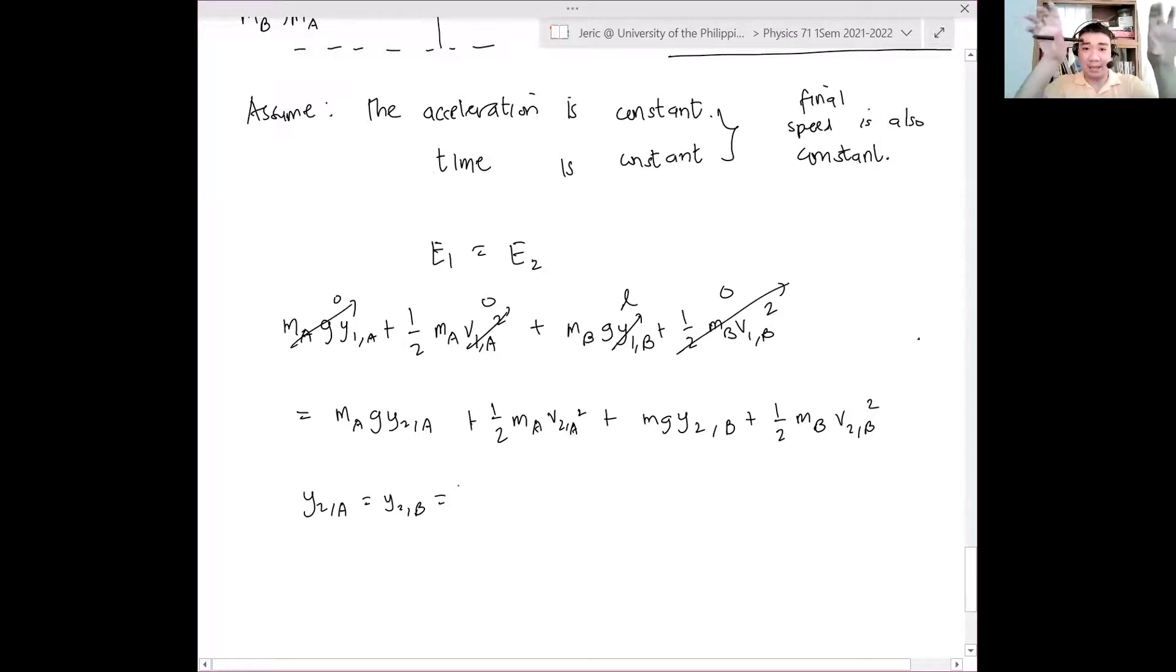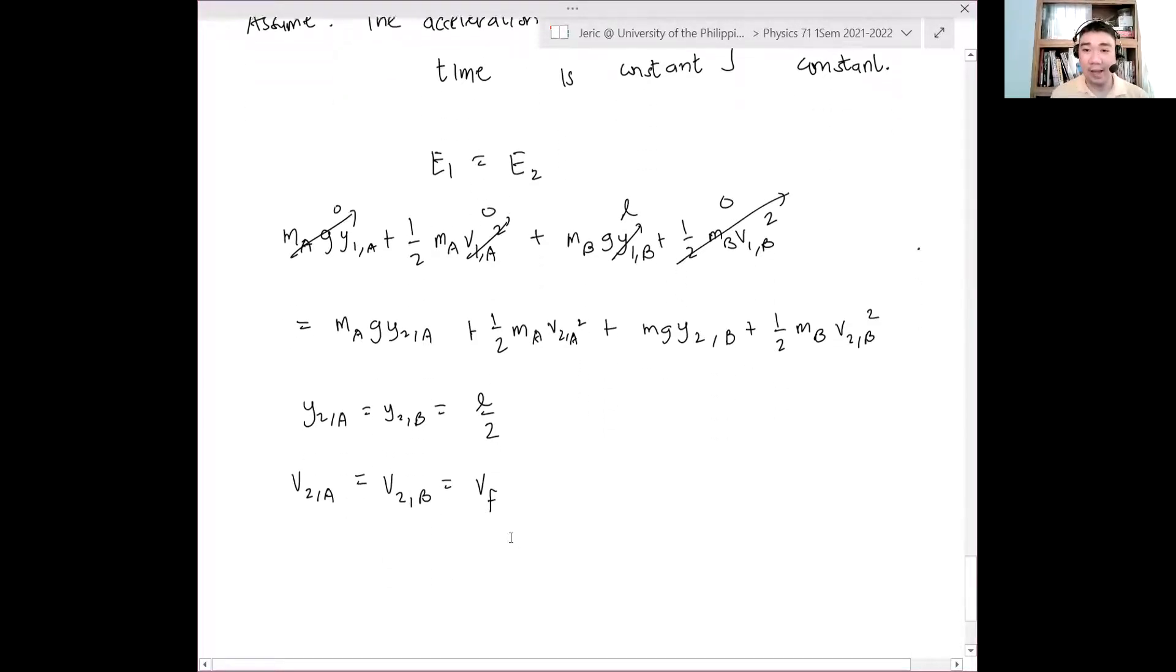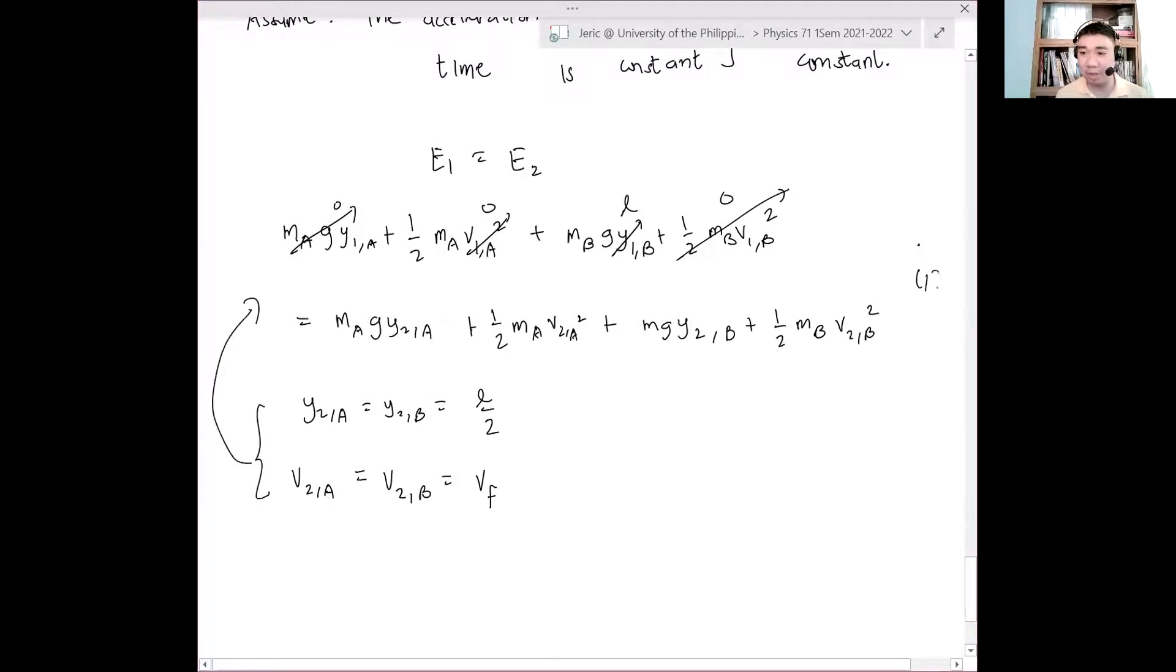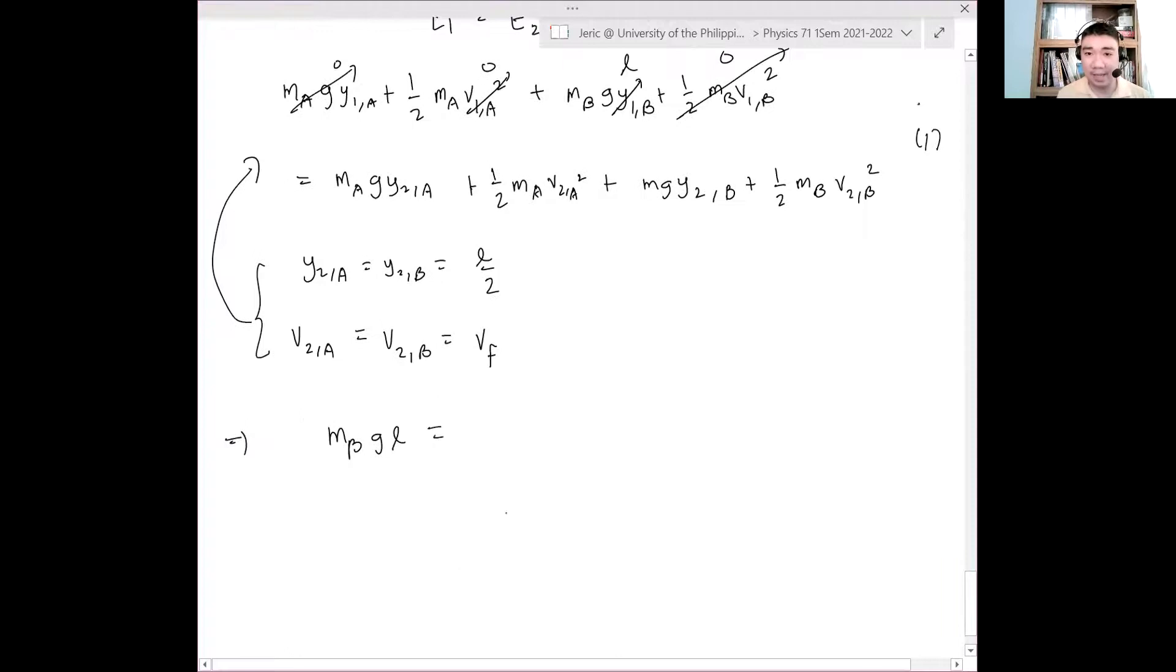This is just equal to MA g, sorry this should be y1a, and this should be y2a, the vertical position of A at state 2, plus one half MA v2a squared, plus MB g y2b, plus one half MB v2b squared. What happens is both y2a and y2b will be the same. So y2a equals y2b which is just equal to L over 2. At the end of their position, it's L over 2.